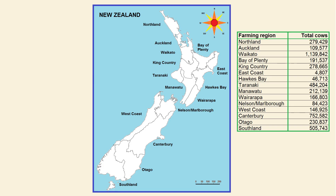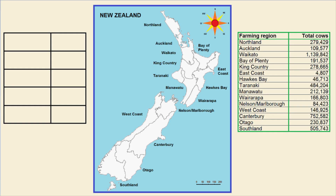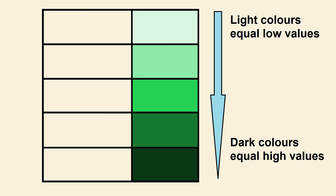The map already has the conventions of a title, north point, and a scale bar down the bottom. But first, my map is going to need a key that shows the different colors we're going to use. When making a choropleth map you want to arrange your colors from light to dark. Lighter colors represent low values and darker colors represent high values.